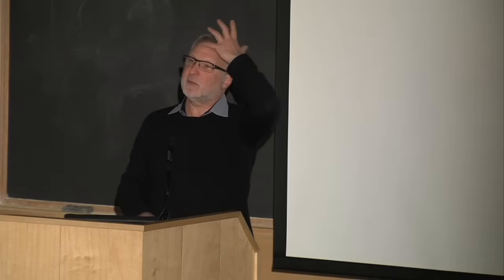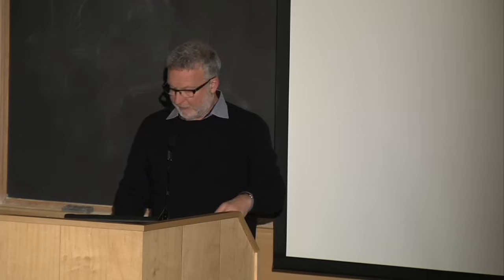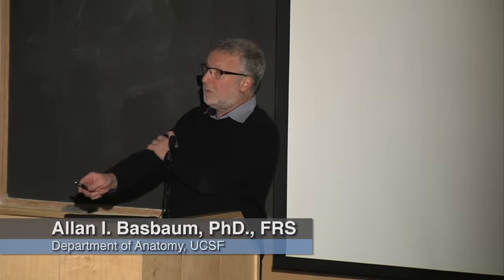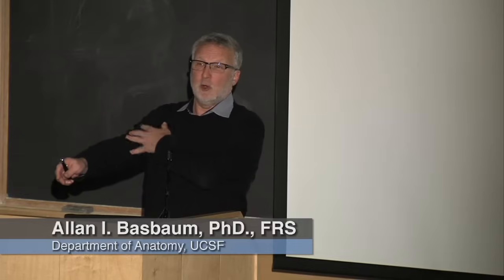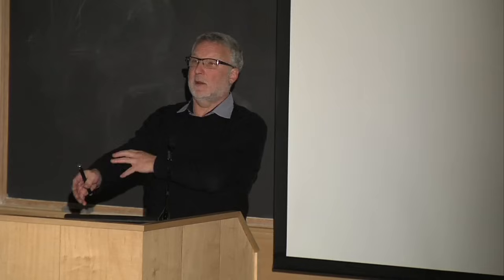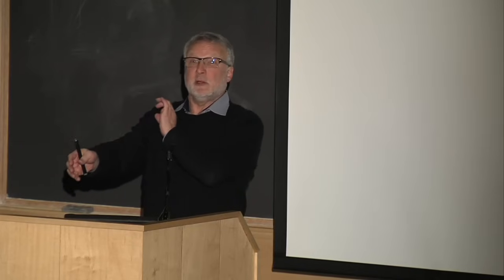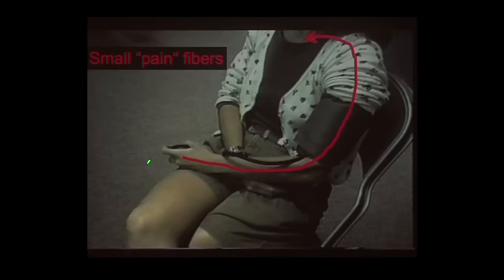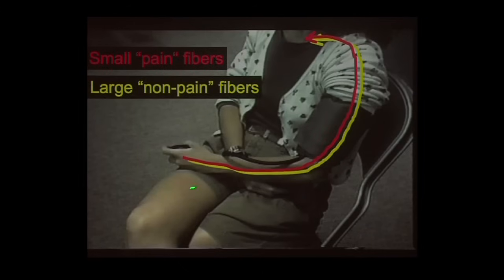What happens if you lose large fibers? I have a film of this experiment — I used to do it with students live, but they don't let me do that anymore. The subject is a former student of mine, Dana Rhodes, now on the faculty here. I can block all the large fibers experimentally by putting a blood pressure cuff on an arm, inflating it above systolic pressure so there's no blood or oxygen running to the arm. The arm will be paralyzed because the large fibers make the muscles move. The large fibers require more oxygen, so you can selectively block them.